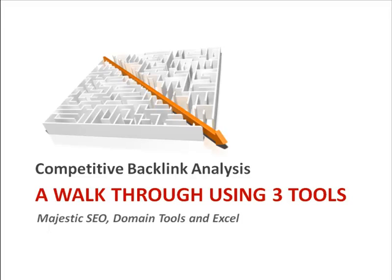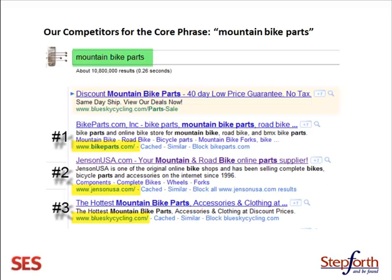Competitive Backlink Analysis — let's go through an actual analysis. We're going to use three tools: Majestic SEO, Domain Tools, and Excel — SEO's best friend. We need to pick a phrase, and in this case we found that Mountain Bike Parts is one of the main phrases we'd like to rank for. From that, we need to pick our competitors: BikeParts.com, JensenUSA.com, and BlueskyCycling.com are the ones we chose for this analysis.